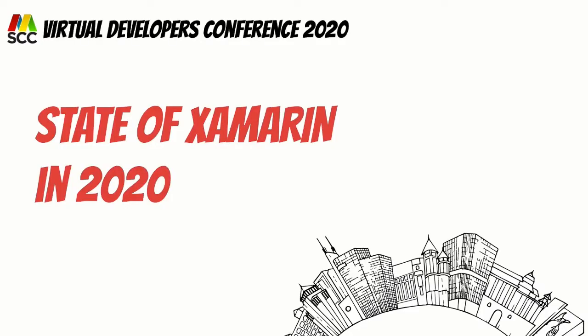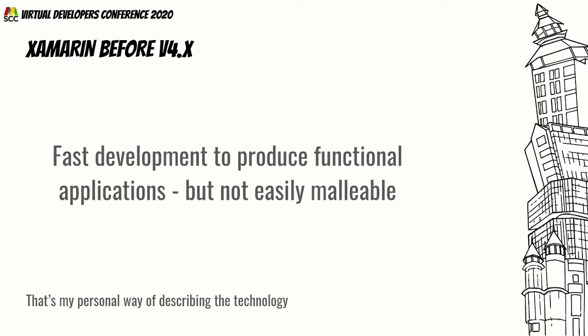Xamarin has been here for a long time and it wasn't always the best — it had its ups and downs like almost every technology. For this virtual developers conference, I thought it would be interesting to look at the state of Xamarin in 2020: is it a good offering for cross-platform development? We have Flutter, React Native, and Ionic, though I'll focus mainly on Xamarin, Flutter, and React Native as comparisons since they operate on the same wavelength.